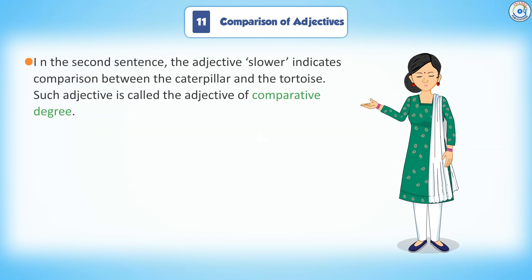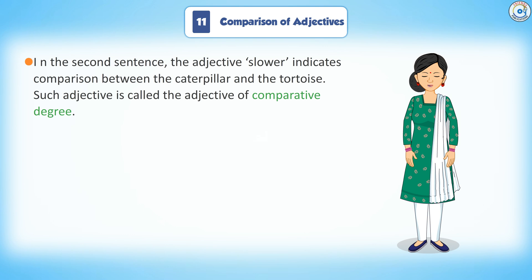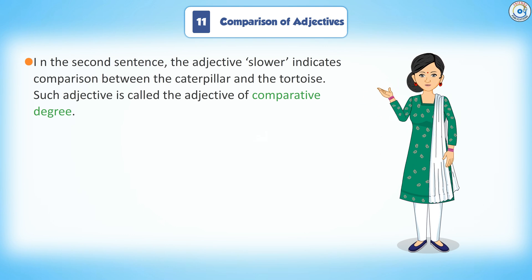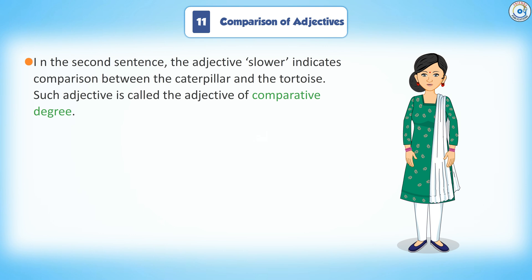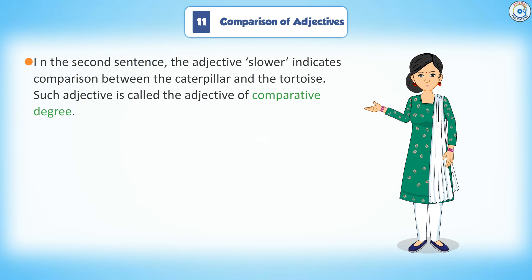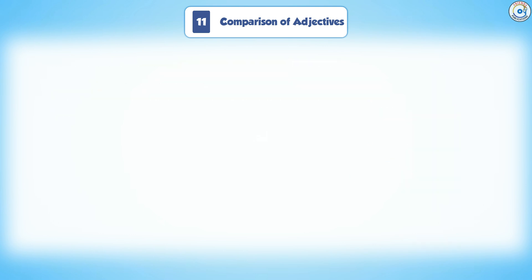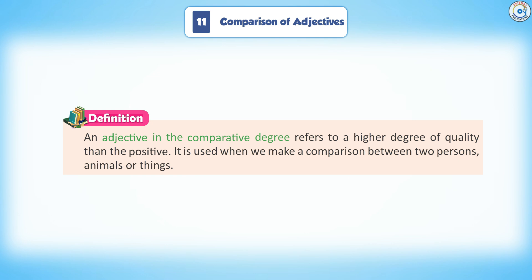In the second sentence, the adjective 'slower' indicates comparison between the caterpillar and the tortoise. Such an adjective is called the adjective of comparative degree. Definition: An adjective in the comparative degree refers to a higher degree of quality than the positive. It is used when we make a comparison between two persons, animals or things.